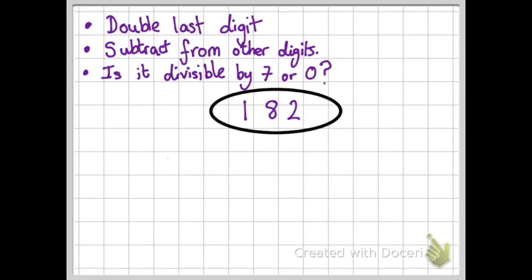So here I have a number which is 182. Now I don't know my seven times table up to 182, so I don't know if that number is in the seven times table or not, but luckily for me I know a rule so I can check.